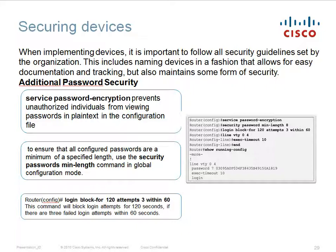Securing devices: when implementing devices, it is important to follow all security guidelines set by the organization, including naming devices in a fashion that allows easy documentation and tracking while maintaining security. Additional password security: service password encryption prevents unauthorized individuals from viewing passwords in plain text in the configuration file. To ensure all configured passwords meet a minimum specified length, use the security passwords min-length command in global configuration mode. You can also use the login block-for command to block login attempts if there are more failed attempts than allowed.